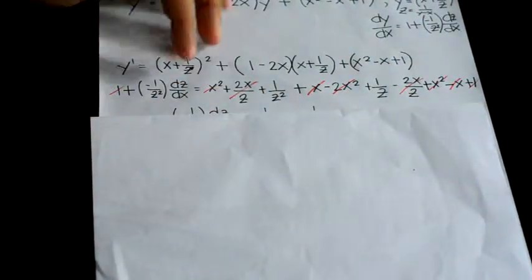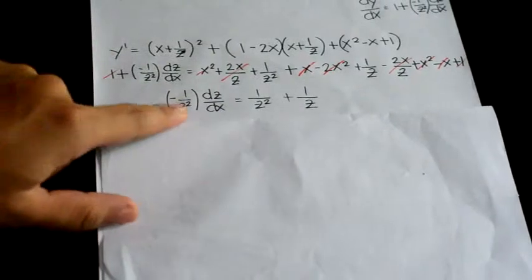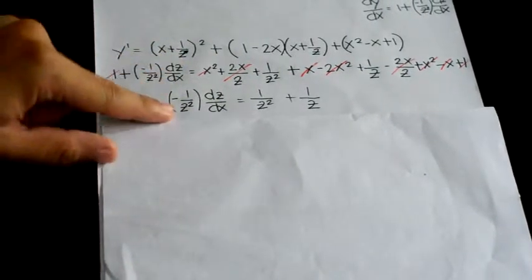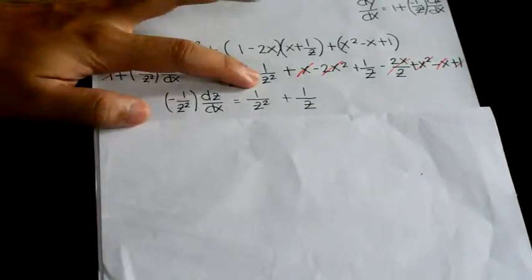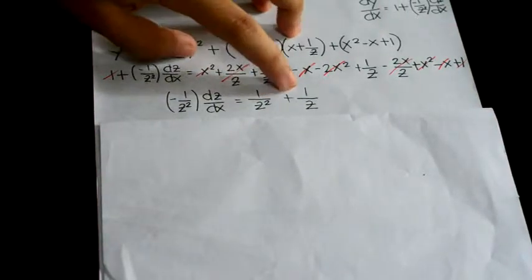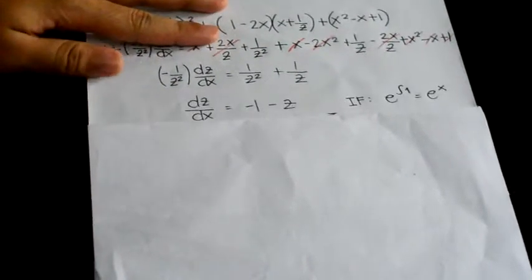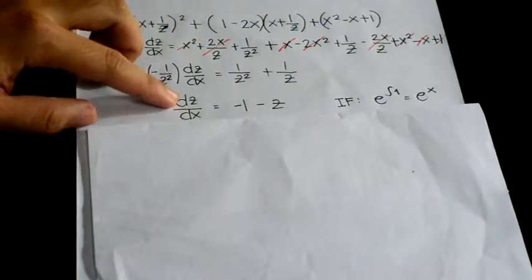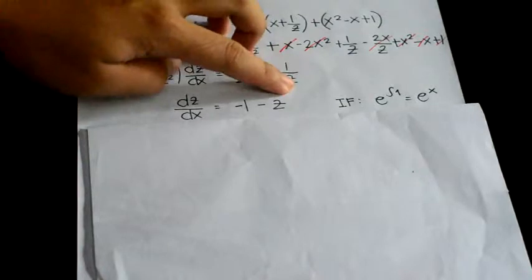Plus x squared minus x plus 1. Cancel the variables which can be cancelled, and you will get negative 1 over z squared times dz over dx is equal to 1 over z squared plus 1 over z. Now multiply both sides by negative z squared and you will get dz over dx is equal to negative 1 minus z.